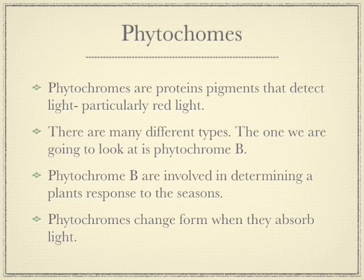Now the main chemicals we're going to look at are phytochromes. Phytochromes are pigments and proteins which are made by the plants themselves, and they're the chemicals used to detect light — they particularly respond to red light. There are many different types of phytochrome: A, B, C, D, etc. The one we're going to look at is phytochrome B, which seems to be the dominant one and the one most involved in photoperiodism.